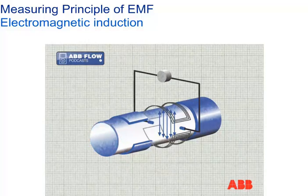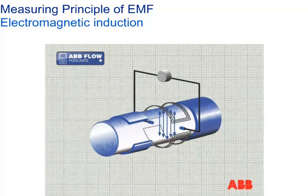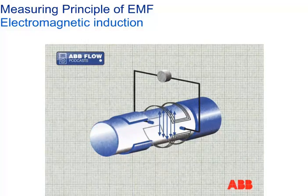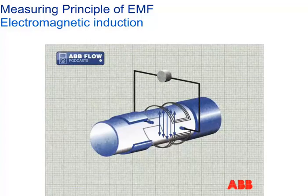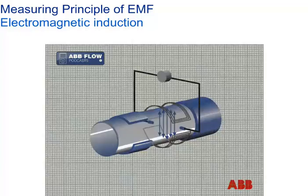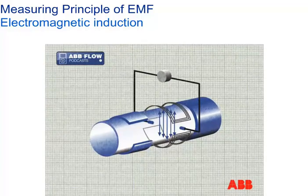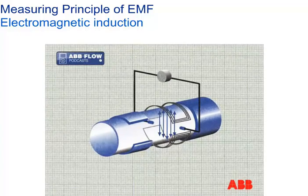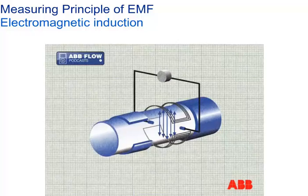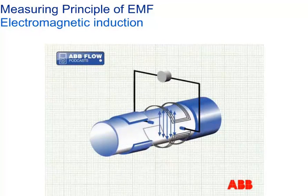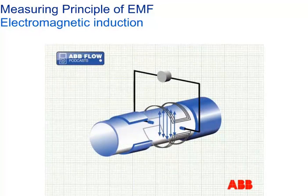Distinguishing between flow-induced voltage changes, electrochemical noise, and plant-induced noise is a barrier to accurate electromagnetic flow metering. This can be especially difficult in dirty and industrial applications.